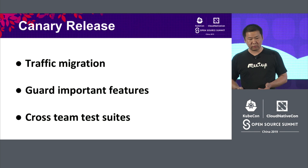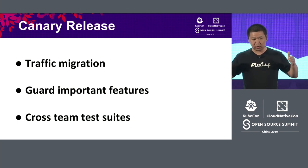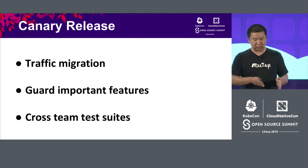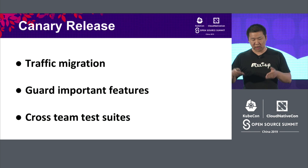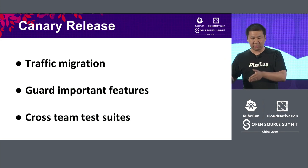Canary release is about traffic migration, so we can use a pipeline to shift traffic from production to shadow traffic. Feature flags are about turning things on or off. Canary is about the pipeline work to have test suites tested against different teams' pipelines.